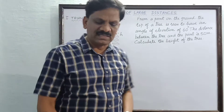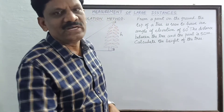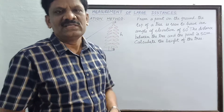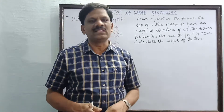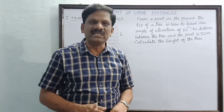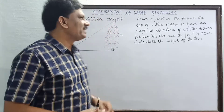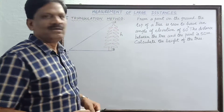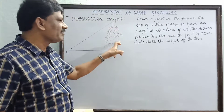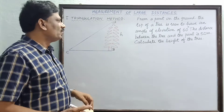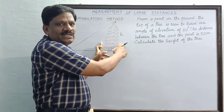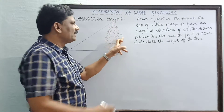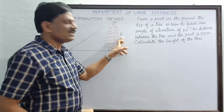The triangulation method is of course based on trigonometry only — sin theta, cos theta, and tan theta, which we have studied. Based on that, we are going to find the height of a tree.